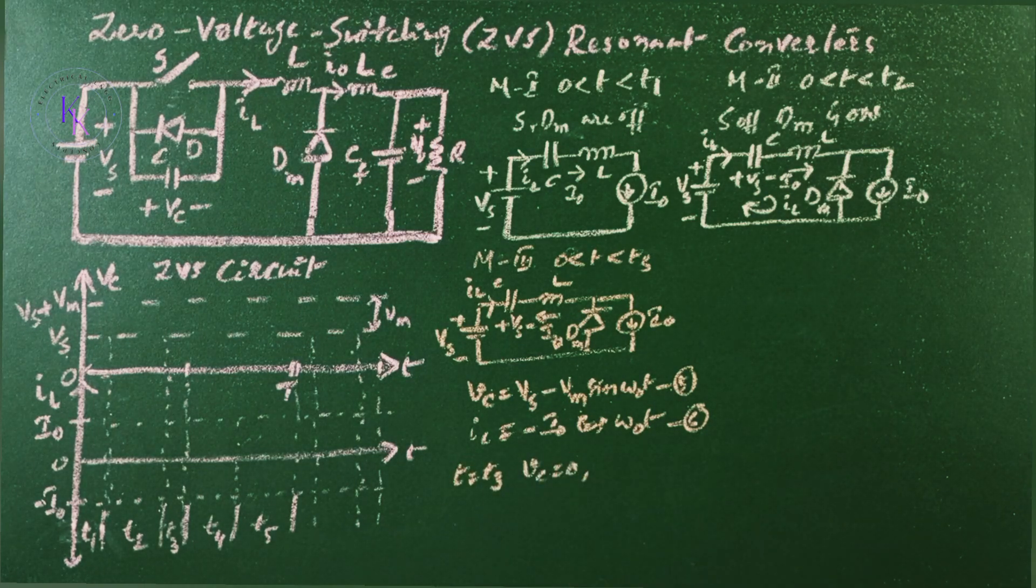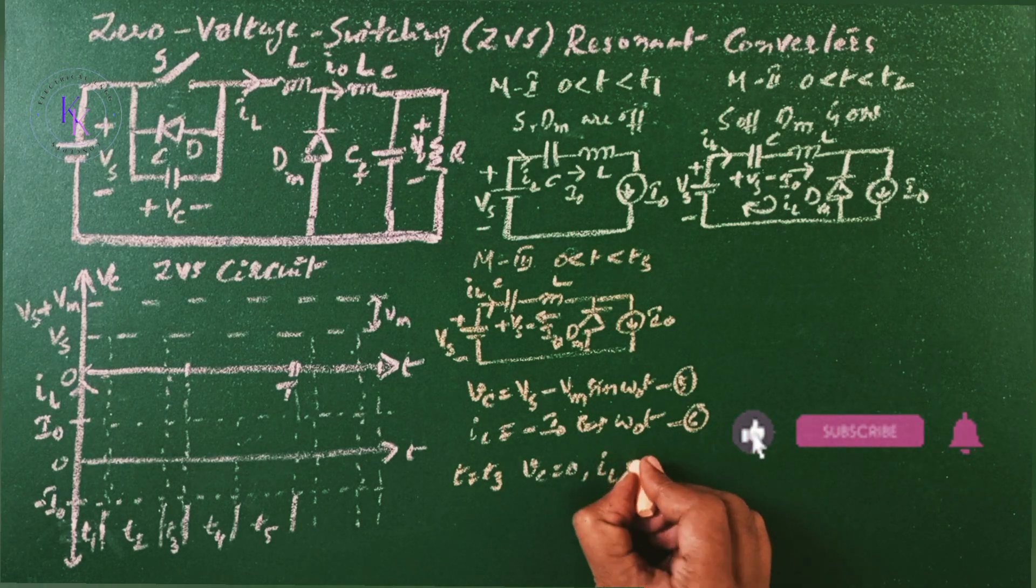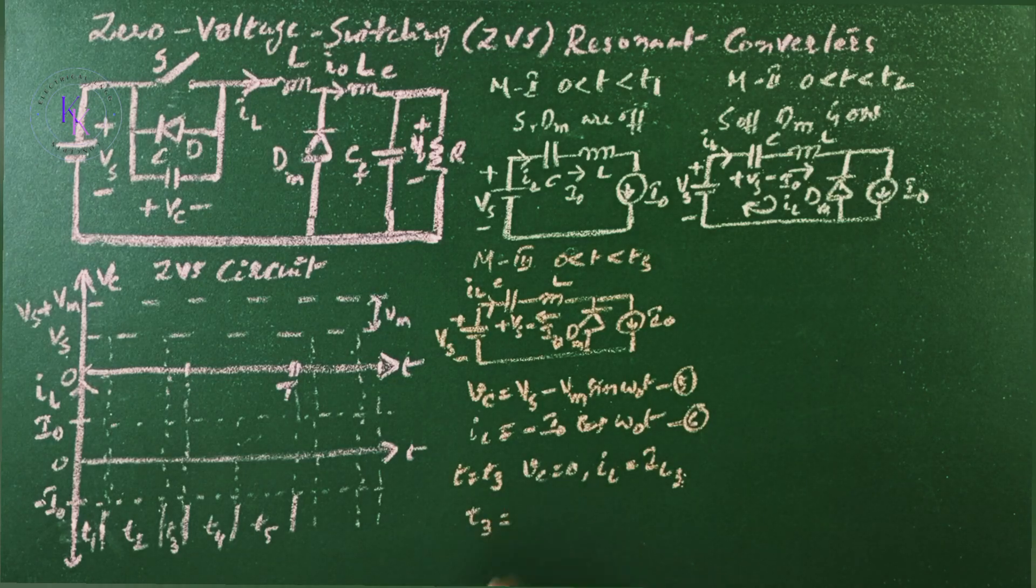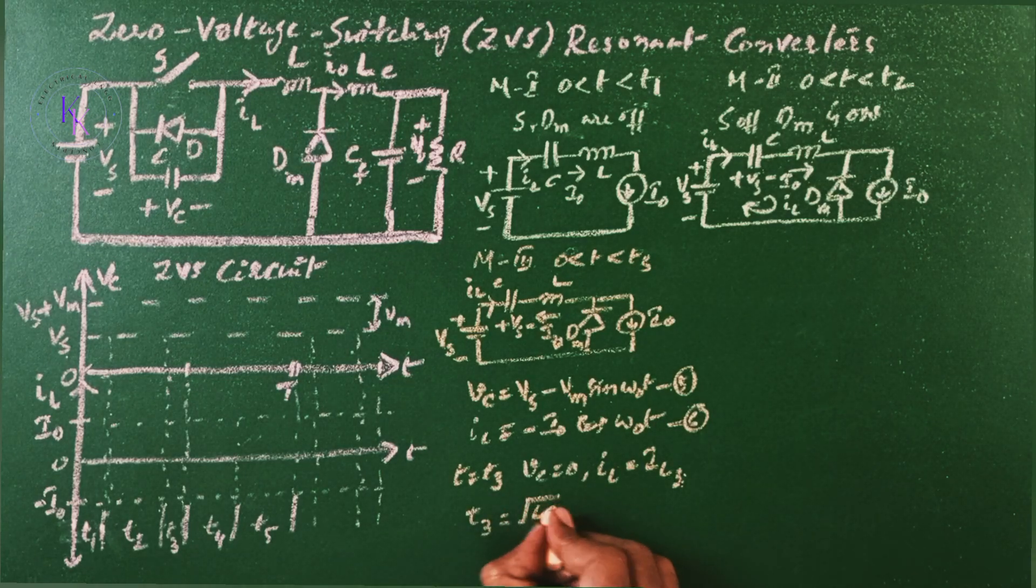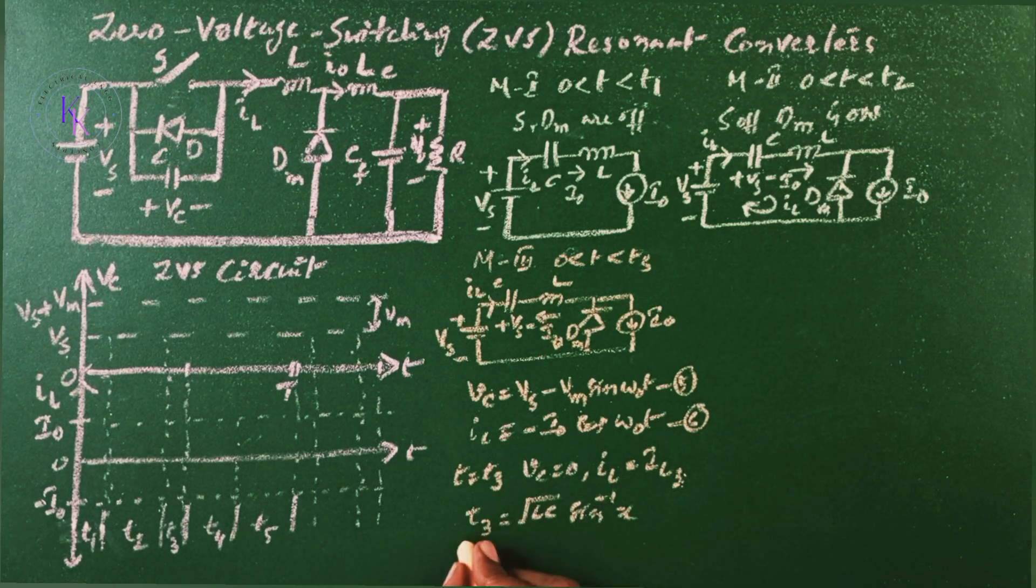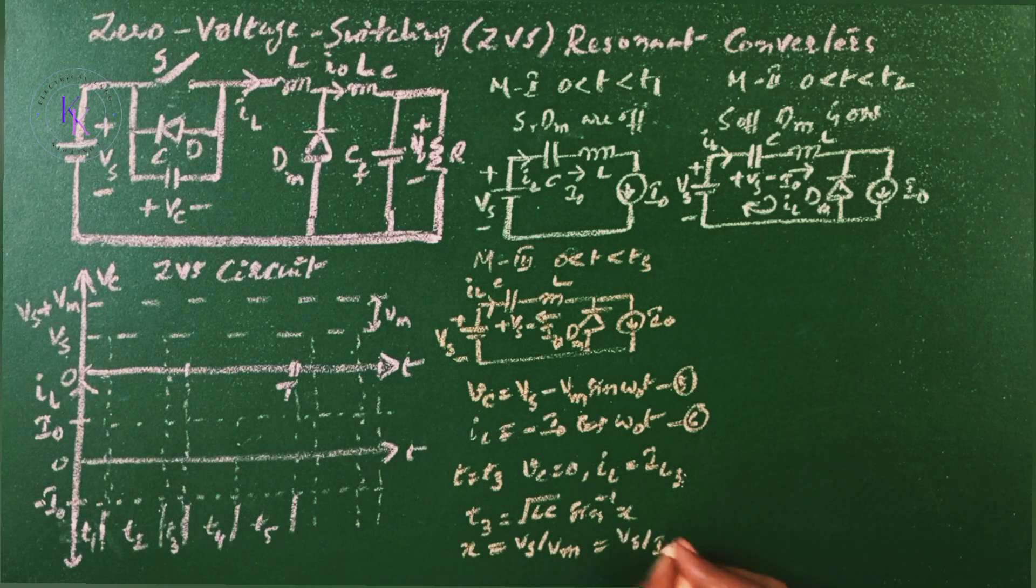And this mode is going to end at T equals to T3 where voltage across the capacitor will become zero and the current of the inductor will be at the third stage. Then the time T3 is given by 2 root of LC sin inverse of x, where x is VS by Vm, which equals to VS by I0 root C by L.